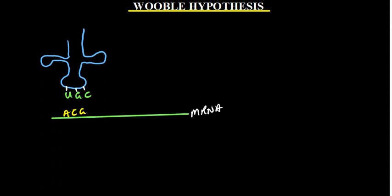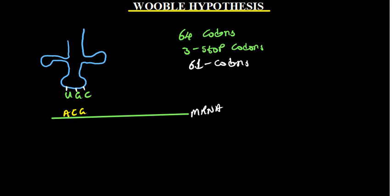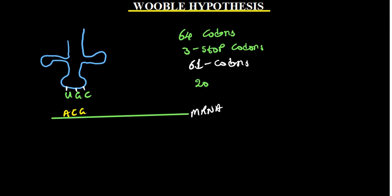In our earlier discussions on translation, we discussed that there are 64 possible codons in total. Three of these do not specify any amino acid, so they are known as stop codons. That means we are left with 61 codons. These 61 codons are the only codons which specify an amino acid. But we don't have 61 amino acids — we only have 20 amino acids in total.